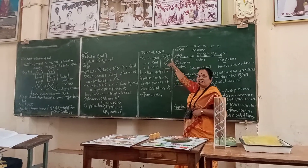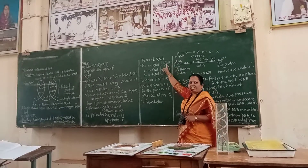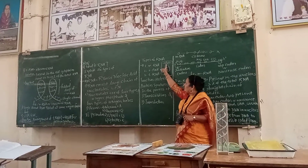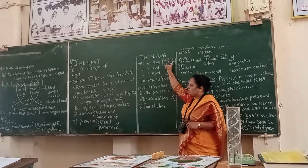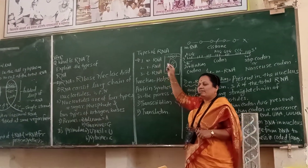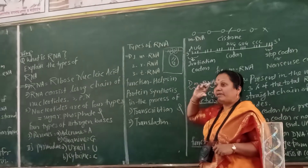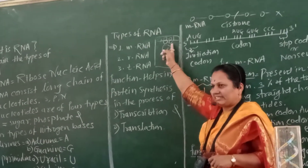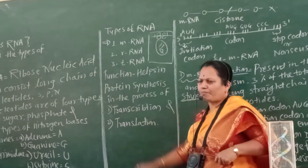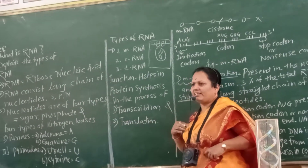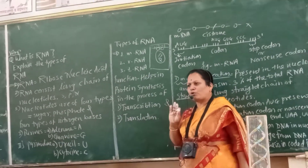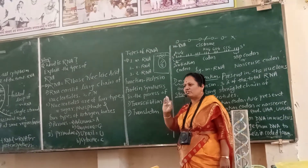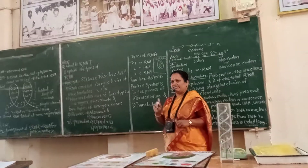At the time of protein synthesis, the ribosomes set up or make a set for protein synthesis. The function of ribosomal RNA is to help in protein synthesis by arranging the mRNA and tRNA.